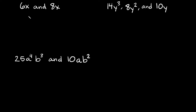Let's find the greatest common factor of 6x and 8x. All you do is multiply everything out. So let's start with 6x — which two prime numbers can we multiply together to get 6? Well, 2 times 3, right? 2 times 3 equals 6, and both 2 and 3 are prime. And then this x is just a single x by itself, so we'll multiply that in too.